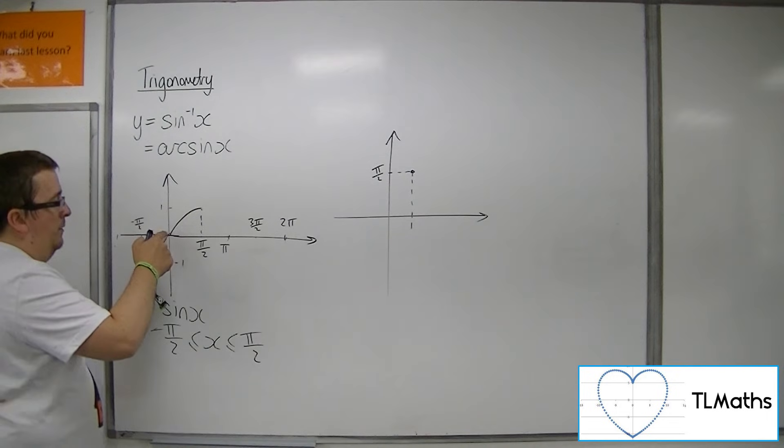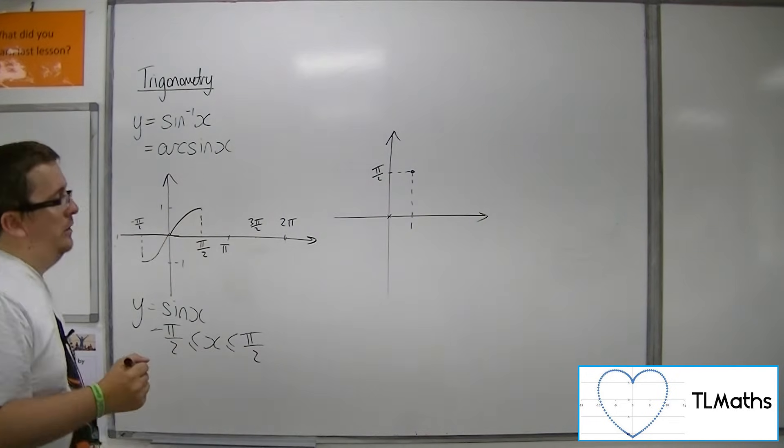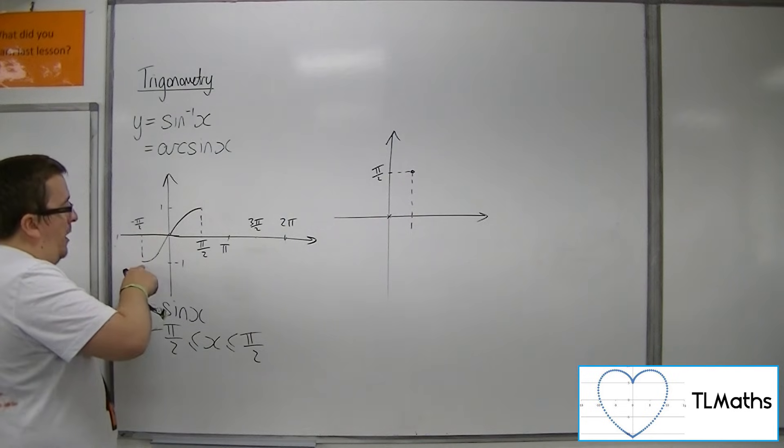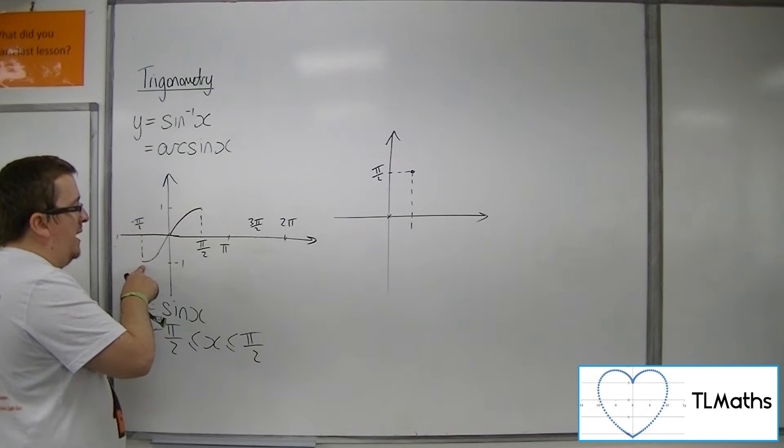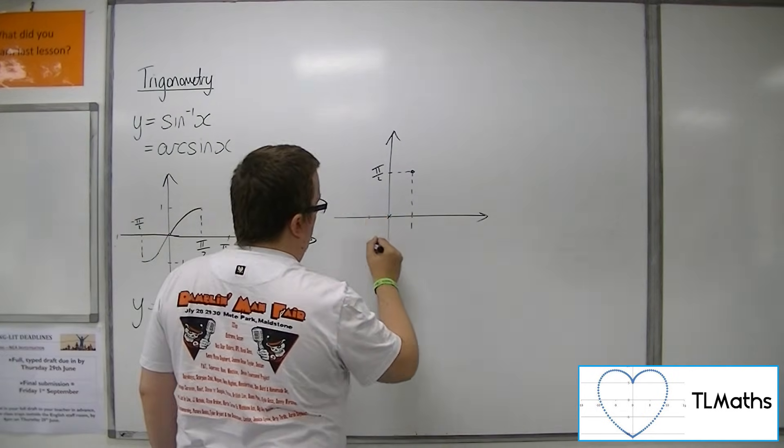0, 0 will become, well, 0, 0. That won't change. And minus pi over 2, minus 1 will become minus 1, minus pi over 2. So minus 1, minus pi over 2.